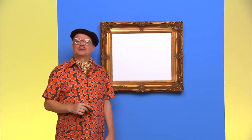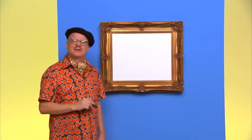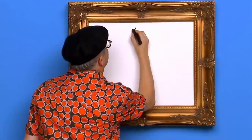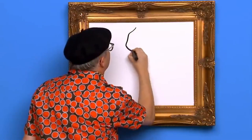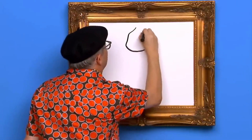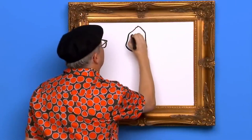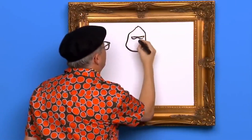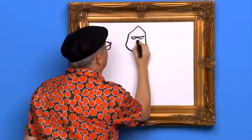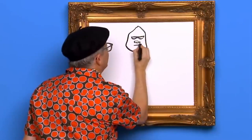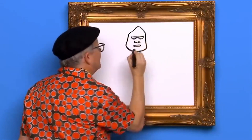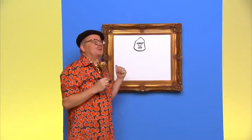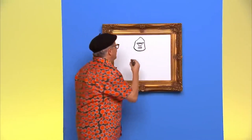First we draw the shape of the robot's head. Now let's draw its arms and hands.